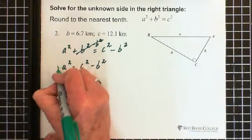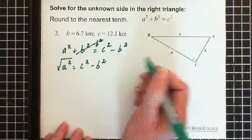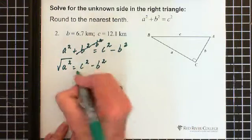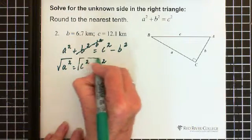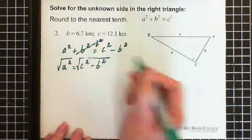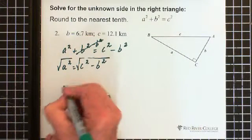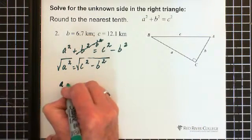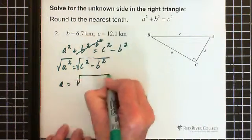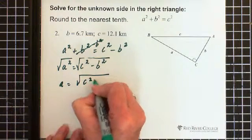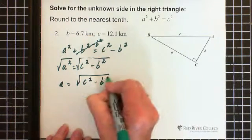To get a by itself, I square root it. But I have to square root both sides because we have an equation. Square root of a² is a, and I end up with a equals the square root of c² minus b².